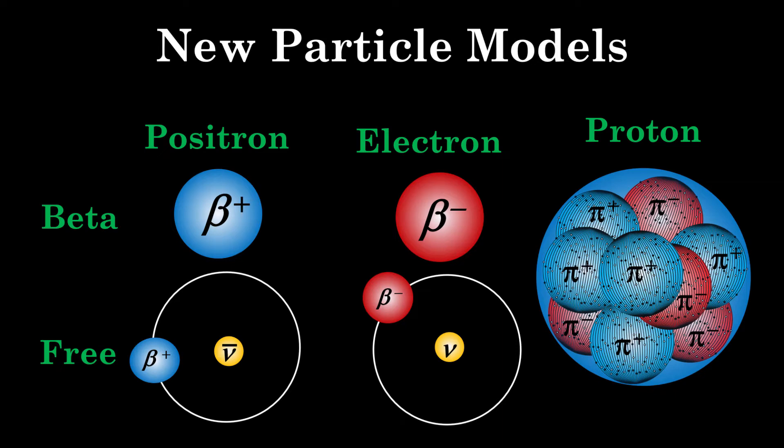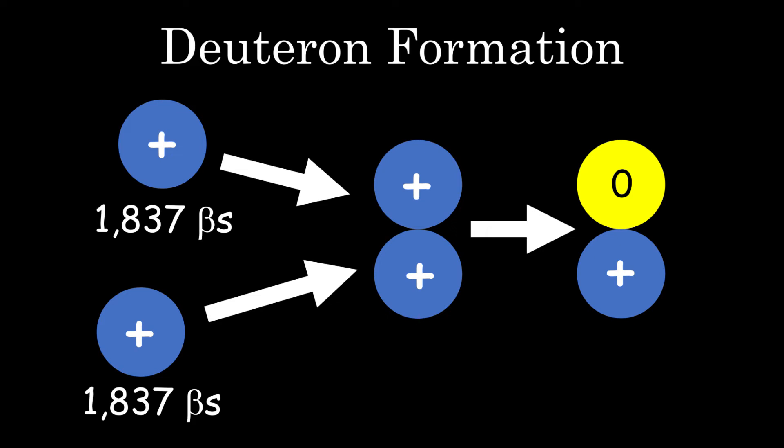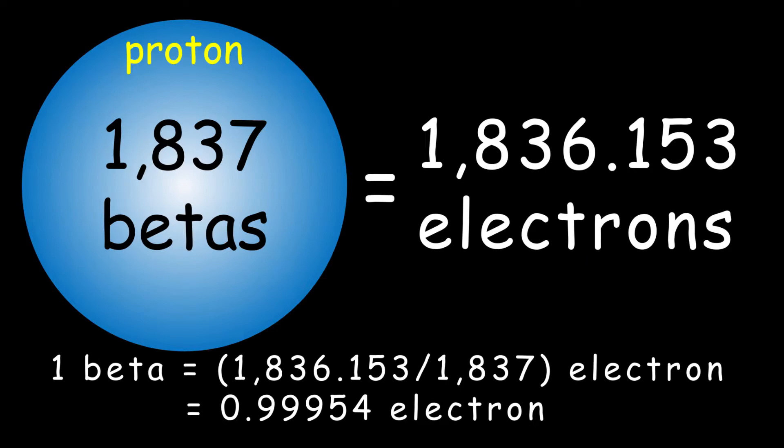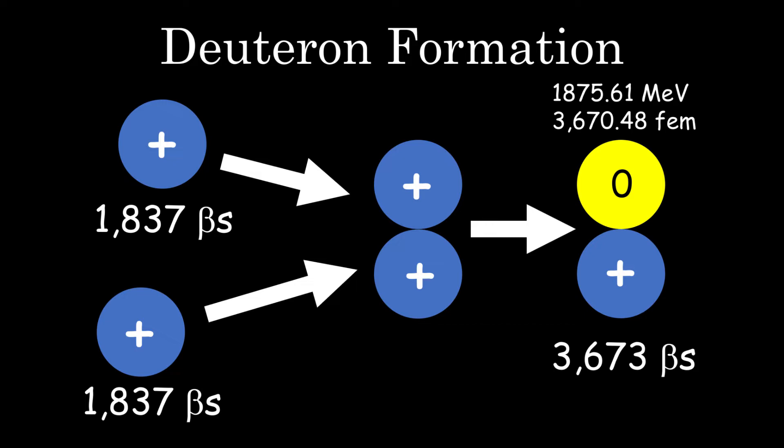First, when two protons collide to form a deuteron, that deuteron has a mass of 1,875.61 MeV, or 3,670.48 free electron masses, and a charge of plus one. Per our model, if the mass of a beta electron is 0.99954 times that of a free electron, then this is apparently 3,673 beta particles: 1,836 beta electrons and 1,837 beta positrons.